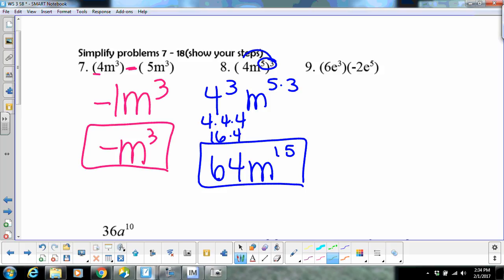Number nine over here is just a multiply problem. So that's going to give me negative twelve, and you add your exponents when you multiply, so that gave us eight.